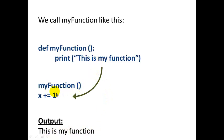And then next, execution will return to the line immediately after our function call. So x plus equals one in this case. So that's how a simple function call works.